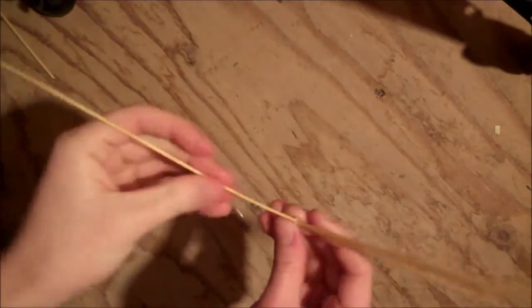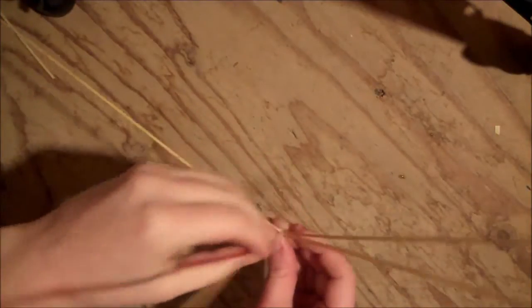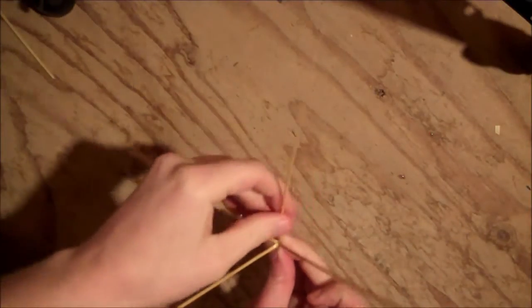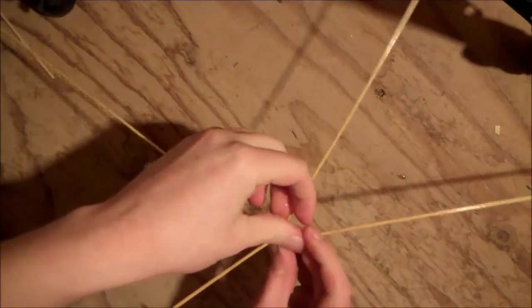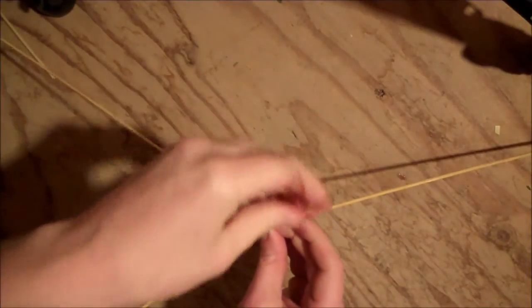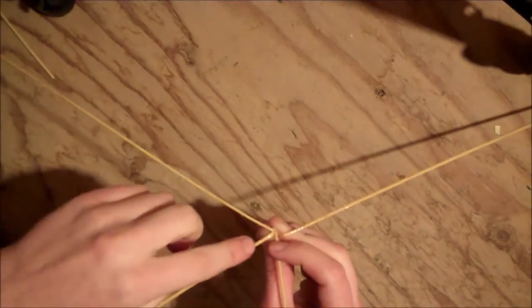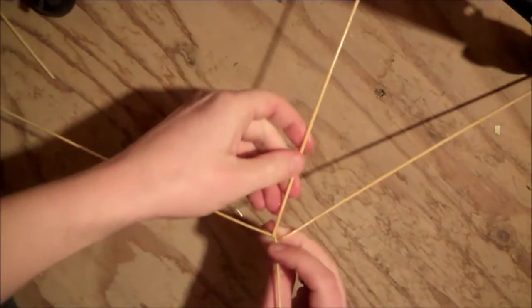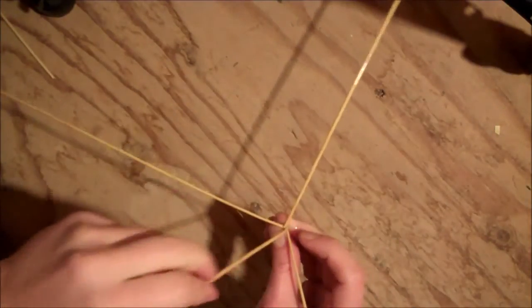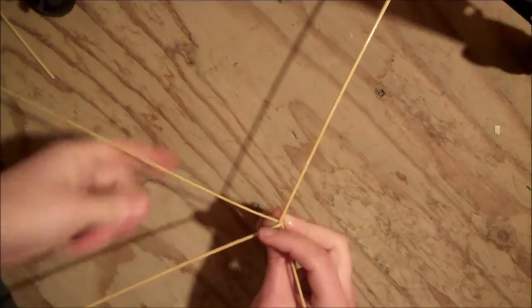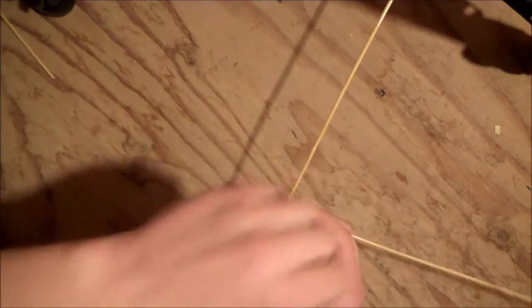So next you'll take four straws without heads. You're just going to spread them out, leaving a gap in one side. You're going to take one straw and fold it into the gap. Take the one next to it and fold it into the gap you just made, and repeat this process with each straw.